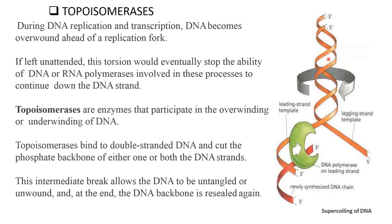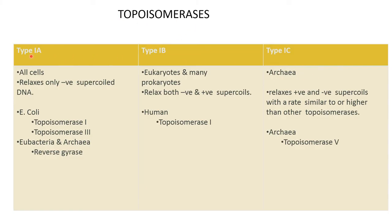During DNA replication or transcription, DNA becomes overwound ahead of the replication fork. If left unaltered, this torsion would eventually stop the ability of DNA polymerase to continue down the DNA strand — that means it halts replication. Topoisomerases are enzymes that participate in unwinding of the DNA. Topoisomerase binds to the double-stranded DNA and cuts the phosphate backbone of either one of the DNA strands. This intermediate break allows the DNA to untangle or unwind, and at the end, the DNA backbone is rejoined.